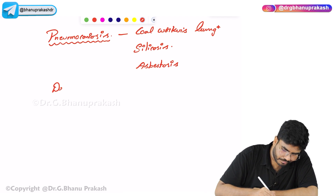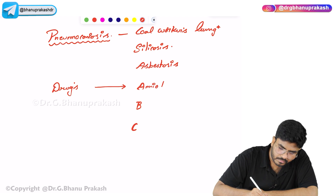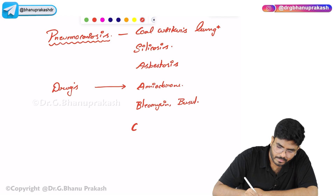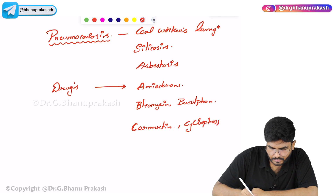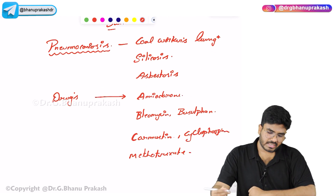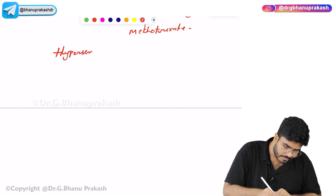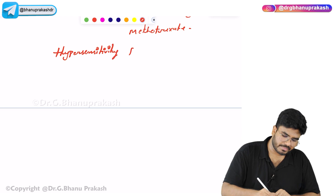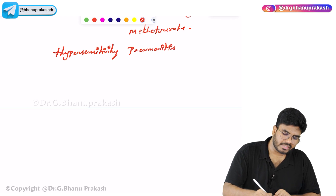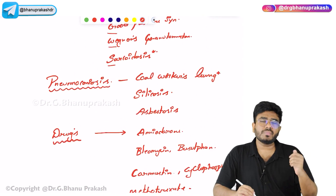Certain drugs are also going to cause pulmonary fibrosis — think of the ABC drugs: Amiodarone, Bleomycin, Busulfan, Carmustine, Cyclophosphamide, and Methotrexate. These are drugs which can lead to pulmonary fibrosis, that's a restrictive lung disease. The next condition is hypersensitivity pneumonitis, which can also lead to restrictive lung diseases.